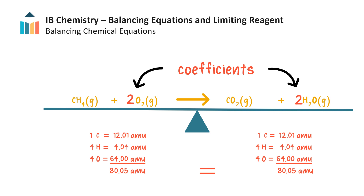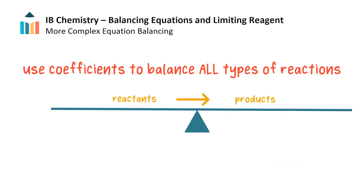Note that by adding coefficients of two in front of oxygen and water, the number of atoms of each element remains the same as the substances undergo a chemical change and move from reactants to products. Because the number of atoms of each element has been conserved, the overall mass is also conserved, and the Law of Conservation of Mass has been obeyed. There are many types of chemical equations representing different types of chemical reactions, but all must be balanced with coefficients so that the chemical change represented obeys the Law of Conservation of Mass. Here are some examples of some chemical equations that are a bit more involved when balancing.